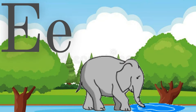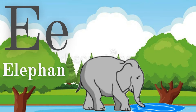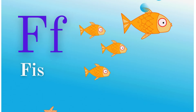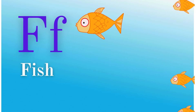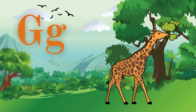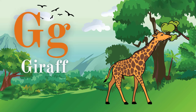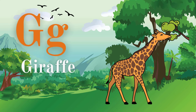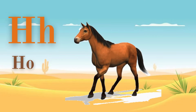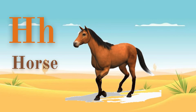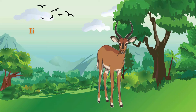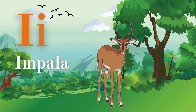E is for Elephant. F is for Fish. G is for Giraffe. H is for Horse. I is for Impala.